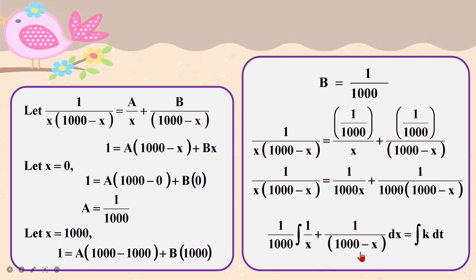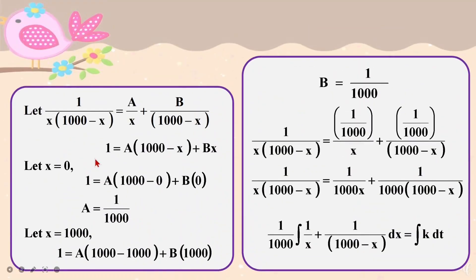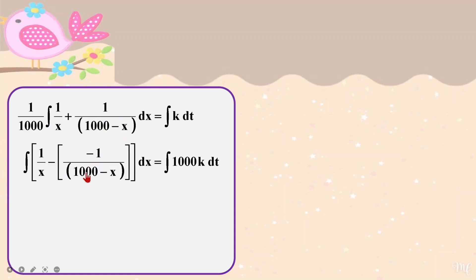With this, I have to decide what to do. I have one over x, which means I can use the integration of ln to help me. On the other side, I need to do some adjustment: if I differentiate 1000 minus x, I get negative one, but I only have one on top. So I need to adjust my equation accordingly. Once that's done, I can settle it in.